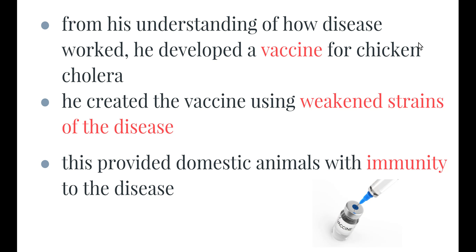From his understanding of how disease worked, Pasteur was one of the first people to develop a vaccine — in particular, a vaccine for chicken cholera. He used weakened strains of the disease, which is exactly how we still create vaccines today: using either weakened or killed strains, given orally or injected, so that the immune system responds as if it were a normal example of the disease, providing immunity. He injected farm animals with this vaccine, and they did not contract chicken cholera.